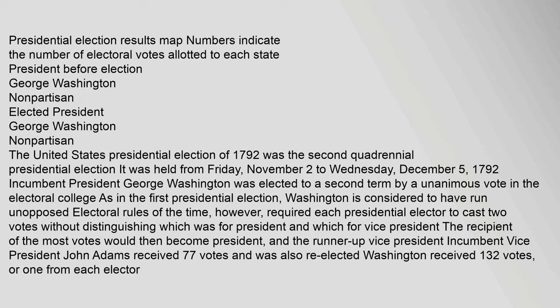Presidential election results. Mapped numbers indicate the number of electoral votes allotted to each state. President before election: George Washington, Nonpartisan, elected President. The United States presidential election of 1792 was the second quadrennial presidential election. It was held from Friday, November 2 to Wednesday, December 5, 1792.